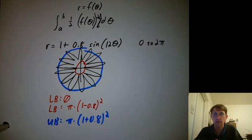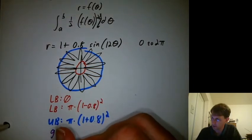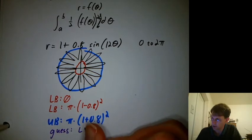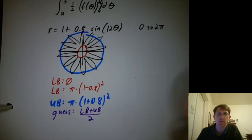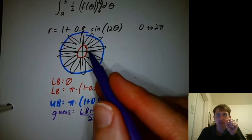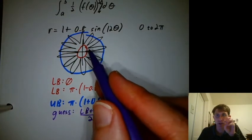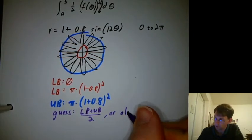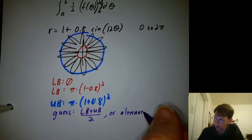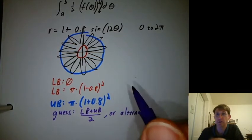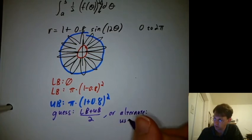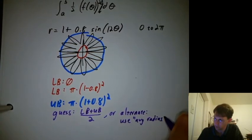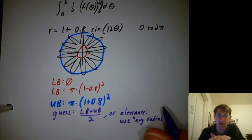And then how about a guess? Well, there's actually two reasonable ways to do the guess. You could do the lower bound plus the upper bound divided by 2. But that kind of ignores the fact that the area of the circle grows in a squared fashion with the radius. So another way would be to say what's kind of the average radius.